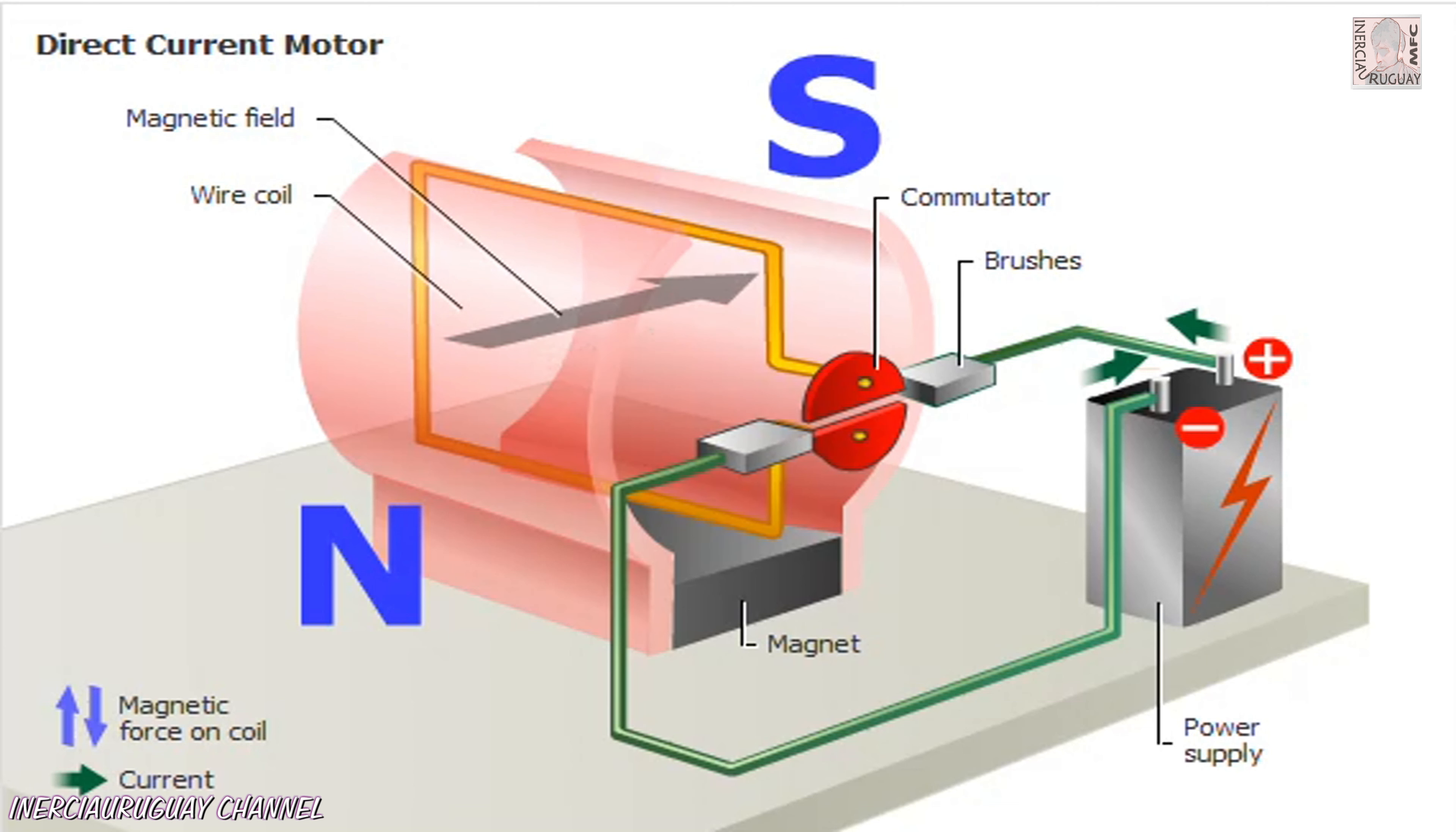After each half turn, the commutator reverses the current. Forces on the coil reverse and the turn is complete. The cycle repeats, making the movement continuous.